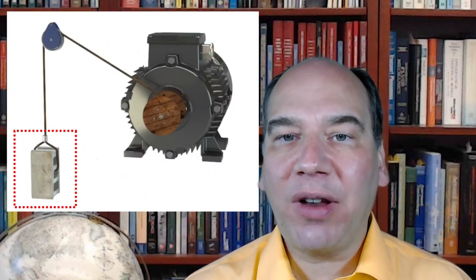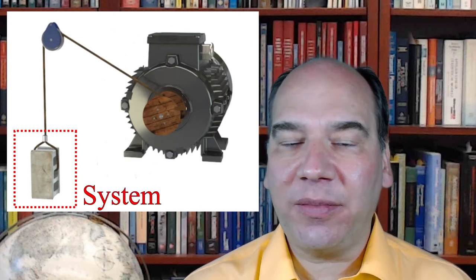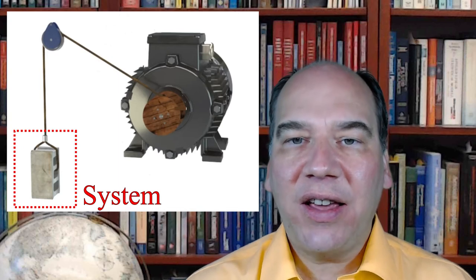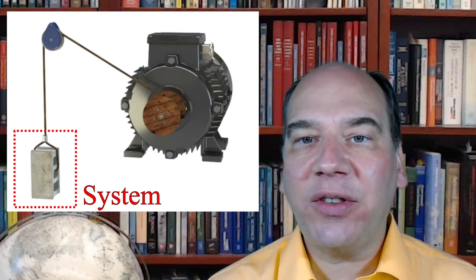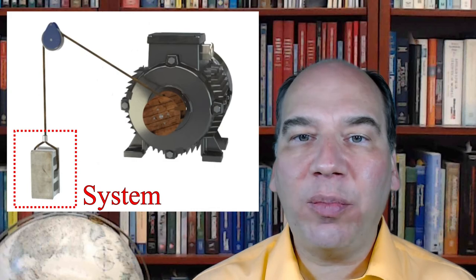We decide what we're interested in. In this case, I'm interested in the weight — the cement block. That's going to be my system. So I draw a red box around it; that's my system. And it's interacting with the surroundings, which in this case contain the generator and the pulley.